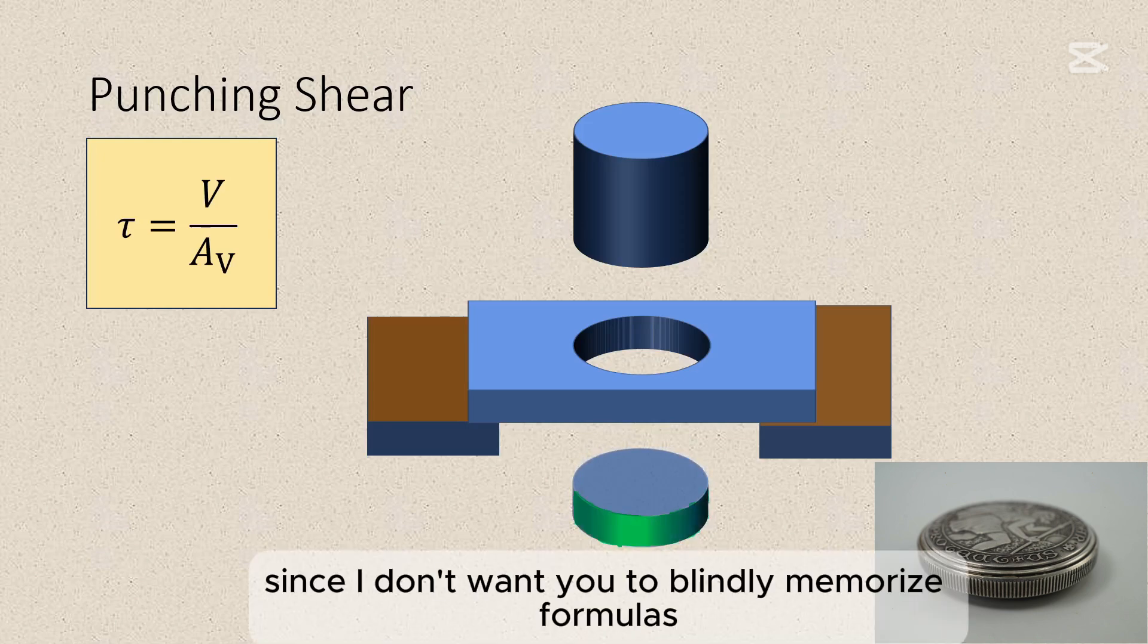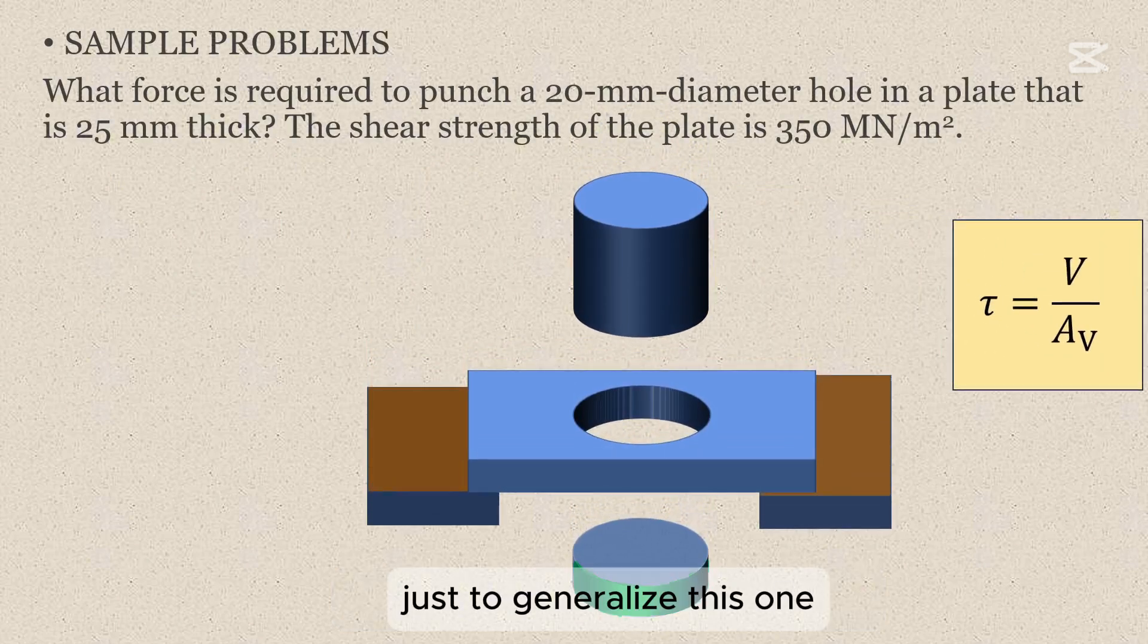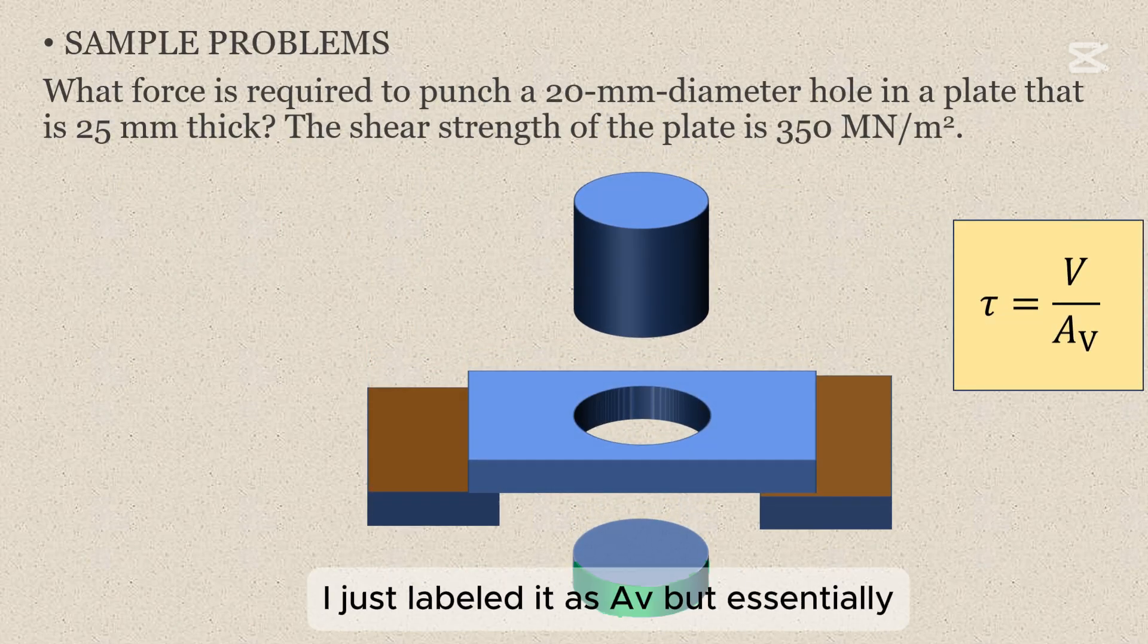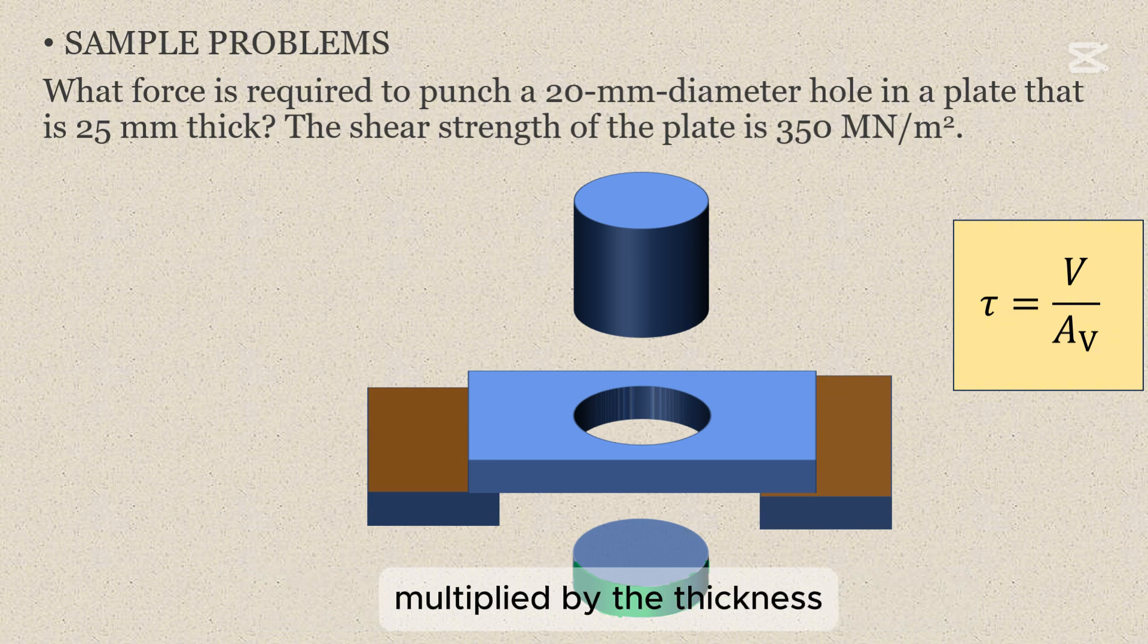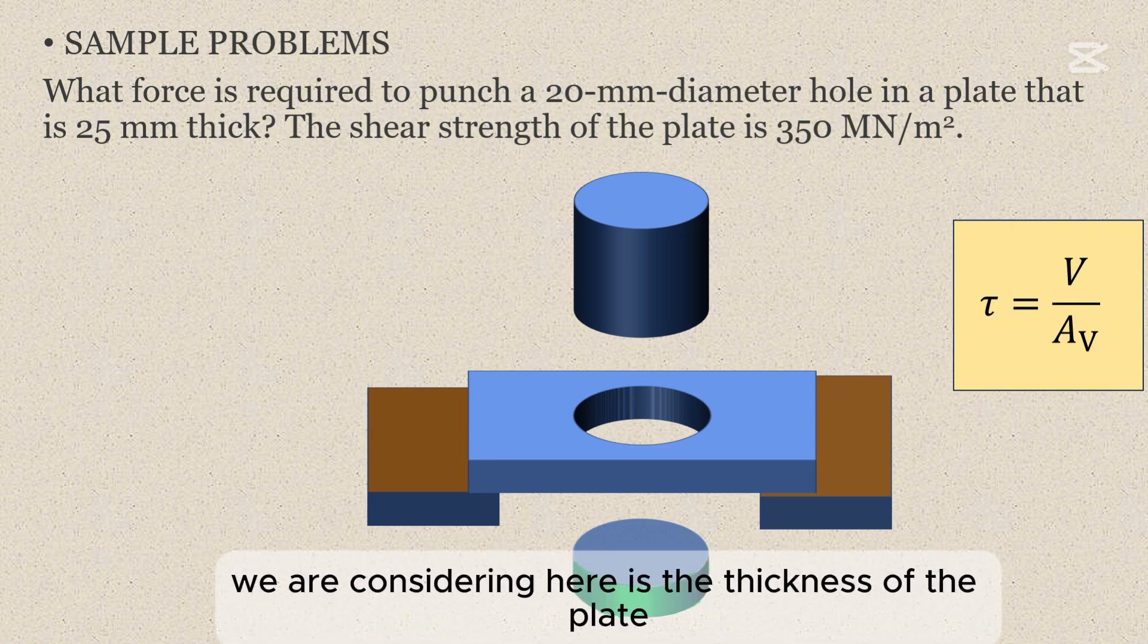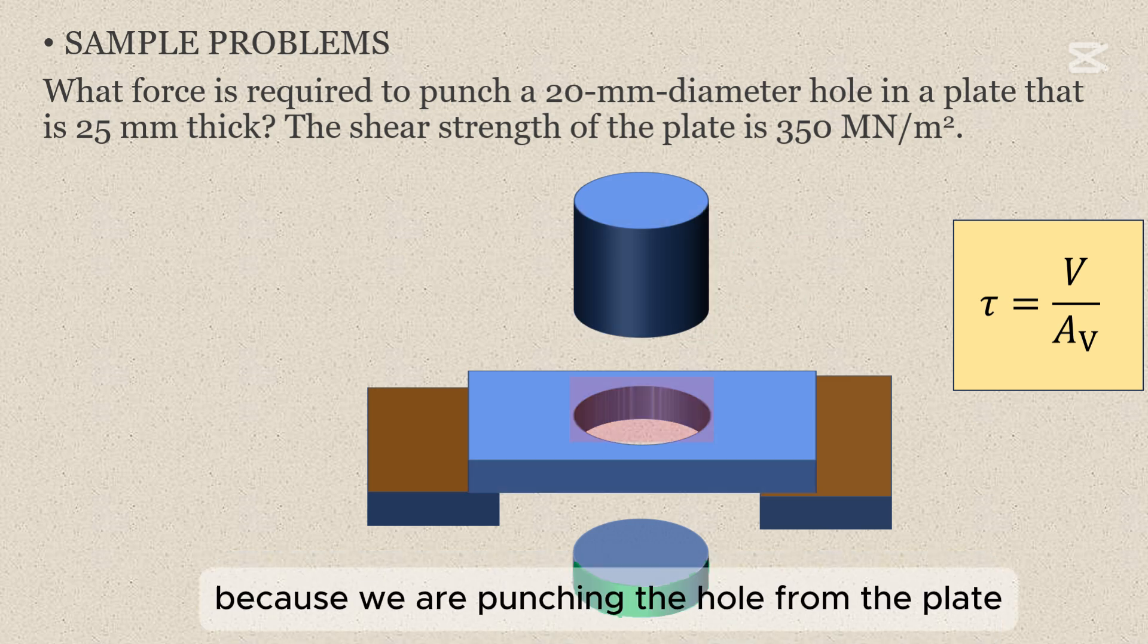Now since I don't want you to blindly memorize formulas without knowing the shear areas, just to generalize this one, I just labeled it as AV. But essentially, AV will be the perimeter of the cross section multiplied by the thickness. The thickness we are considering here is the thickness of the plate, not the punch, because we are punching the hole from the plate.